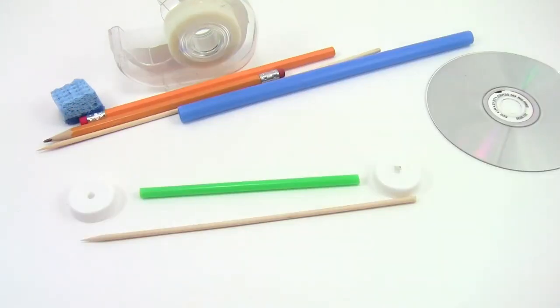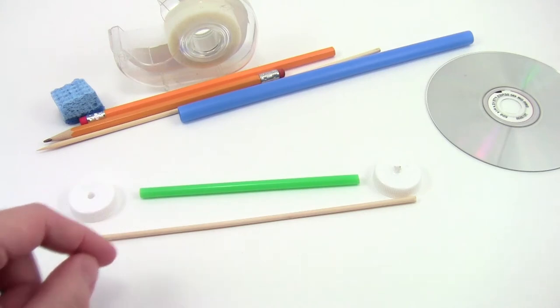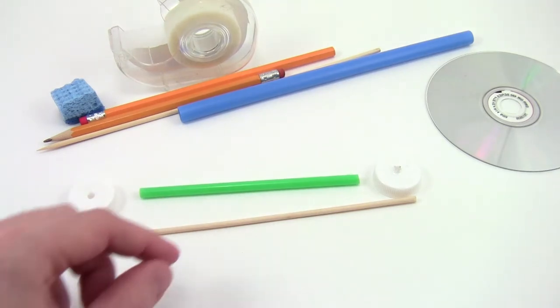For example, to make a wheel and axle using a straw, skewer, and two bottle caps, first cut the straw and the skewer to your desired length.